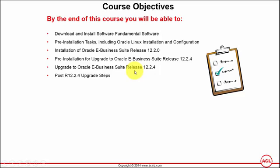The four application tier areas that require patches are: the application server, the Fusion Middleware server, the web tier, and the WebLogic server. Once patches are applied to all four areas, we are ready to apply the suite-wide upgrade patch to upgrade from 12.2.0 to 12.2.4.